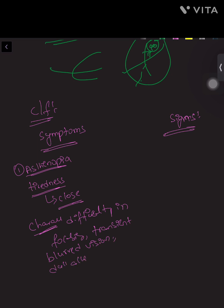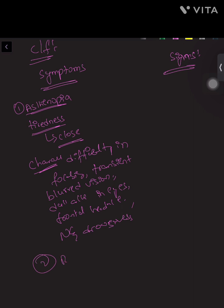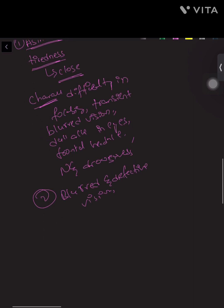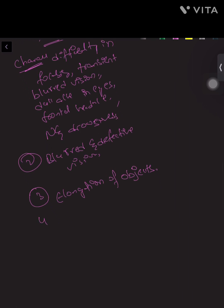Other symptoms of asthenopia include dull ache or pain of the eye, frontal headache, and sometimes nausea and drowsiness. Additional symptoms include blurred vision and defective vision, elongation of objects, and keeping reading materials close to make the image more clear.